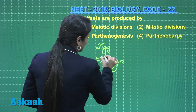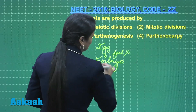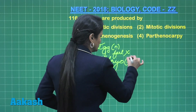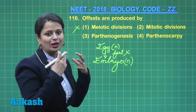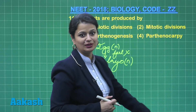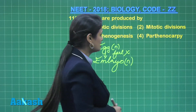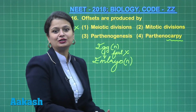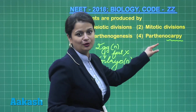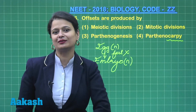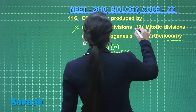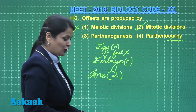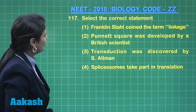Parthenogenesis occurs without fertilization. If a haploid egg forms a haploid embryo without fertilization, this phenomenon is called haploid parthenogenesis. Parthenocarpy should never be confused with parthenogenesis — 'carpi' refers to fruit formation. When fruit is formed without fertilization, that is parthenocarpy. Natural parthenocarpy is seen in banana. The right answer for question 116 is option number two.